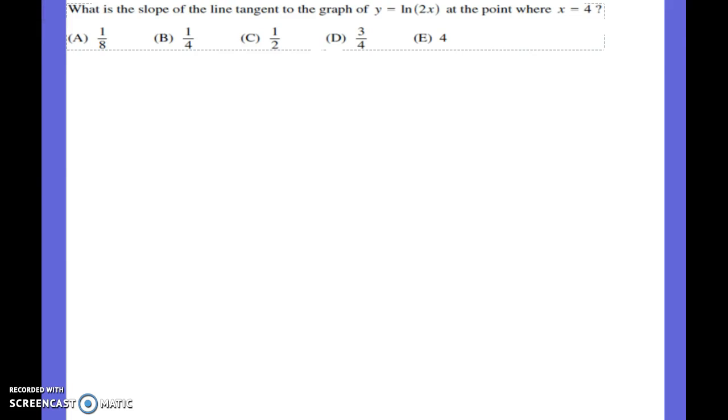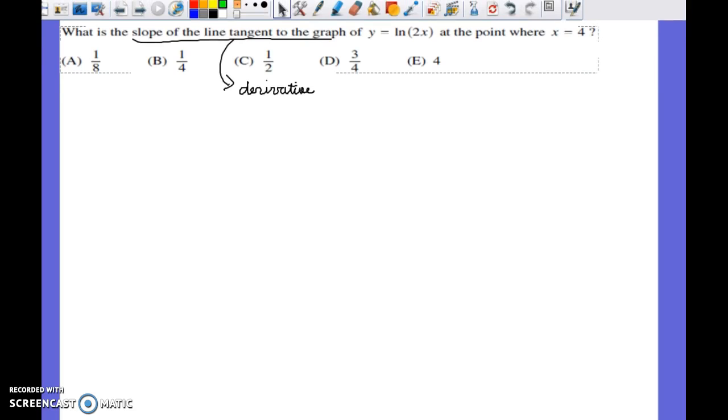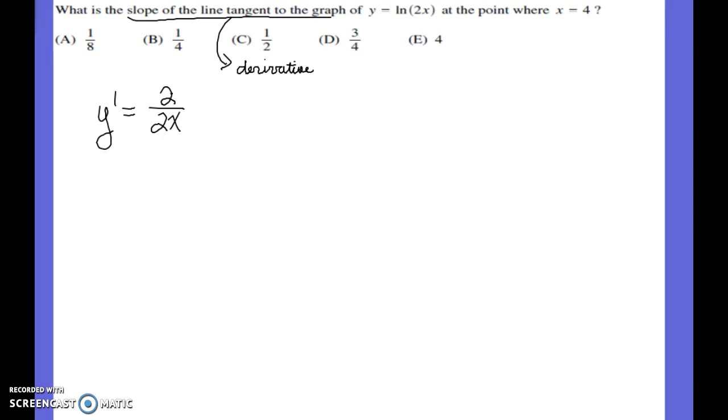This is number 17. Remember, every time it's asking for the slope of the tangent line, it's asking for the derivative. So find the derivative of ln of 2x, which gives you 2 over 2x, reduces down to 1 over x. And evaluate it at x equals 4, which leaves you with 0.4.